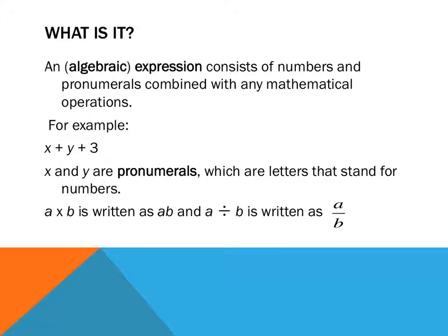So, what is Algebra? Well, we refer to an algebraic expression as anything that consists of numbers and pronumerals. What's a pronumeral? X and Y are pronumerals. What that fancy new word pronumeral means is it just means a letter that stands for a number that we don't know. For example, this thing that I've written here, x plus y plus 3, is an algebraic expression because it's got some pronumerals and it's got some numbers.